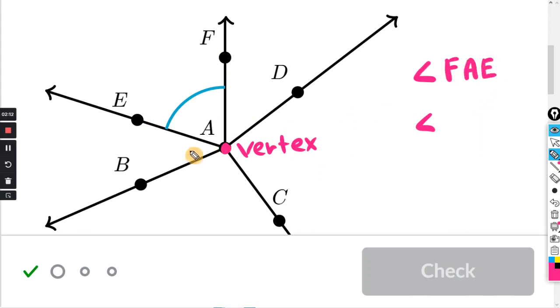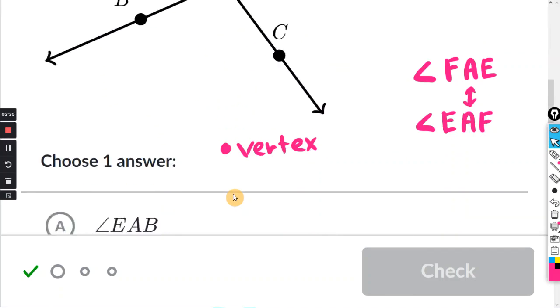Or we can reverse the three letters and say E, A, F. So when you use three letters to name an angle, you can reverse the letters. But as I stated before, the vertex letter has to be the one in the middle.